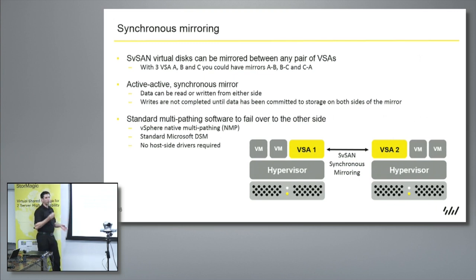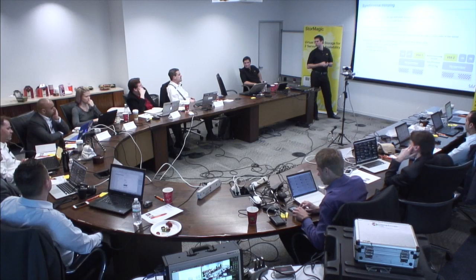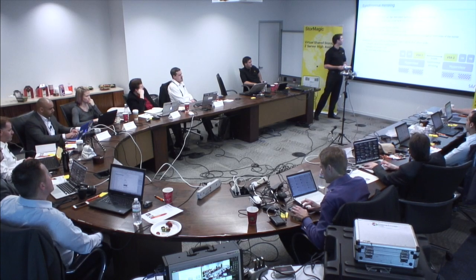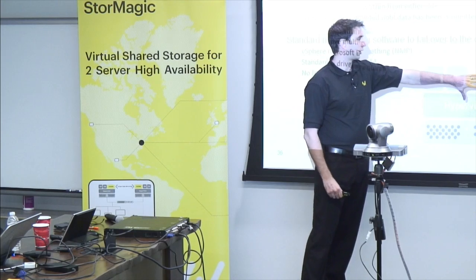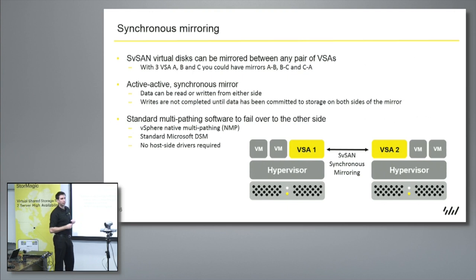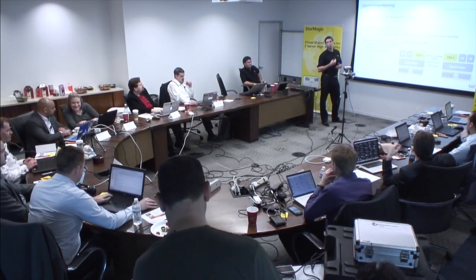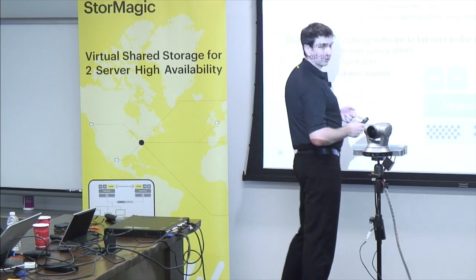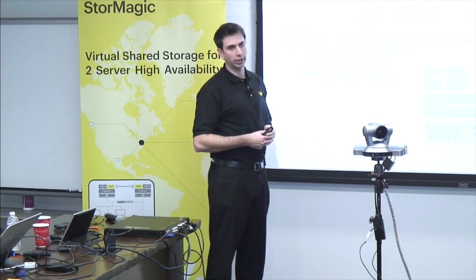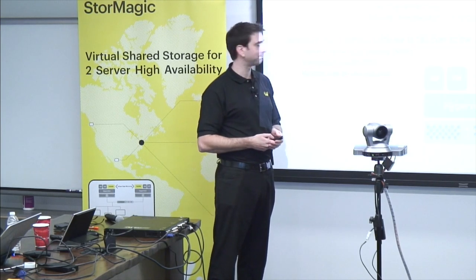The hypervisor has multiple paths to access that storage. If we have a host failure or network failures, simple multipathing within ESX or Hyper-V will handle this. The mirrors are active-active. Writes get committed to the first VSA, which ensures data is committed to the second VSA before acknowledging back up to the OS. Q: How large is the VSA? A: The boot drive is 512 MB, and we also have a journal drive which by default is 20 GB. We use standard multipathing, requiring no additional drivers.